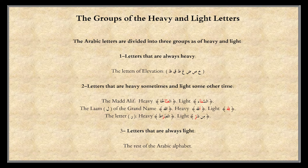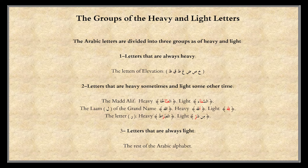Two: letters that are heavy sometimes and light sometimes — the Alif, the Lam of the grand name Allah, and the letter Ra. The Alif of the grand name, like As-Sah-Khah, makes the Alif heavy; As-Sama makes it light. The Lam of the grand name — Allah — heavy; Lillah — light. The letter Ra — heavy: As-Siraatah; light: Min-Shirri. The third group: the rest of the Arabic letters are all light and always light.